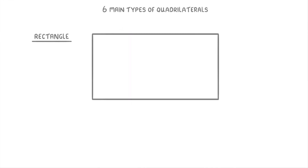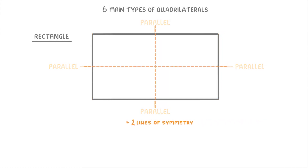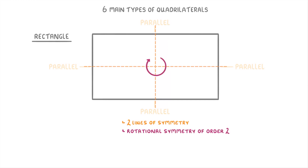Moving on to rectangles, you can think of these as stretched out squares because one pair of parallel sides is longer than the other pair of parallel sides. This means that they only have two lines of symmetry and rotational symmetry of order 2. Just like squares though, all the angles are 90 degree right angles.